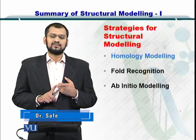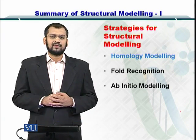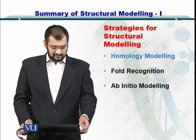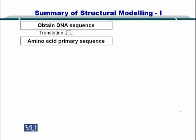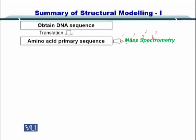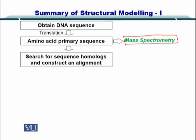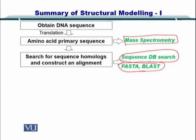We are going to review homology modeling in this module, and the other two in later modules. To start with, you obtain the DNA sequence and translate it into the amino acid primary sequence. Proteins have primary, secondary, tertiary, and quaternary structures, and you can obtain the primary sequence using mass spectrometry. Next, you search for sequence homologs and construct an alignment from the database using BLAST or FASTA in a sequence database search.